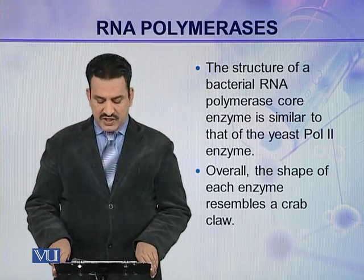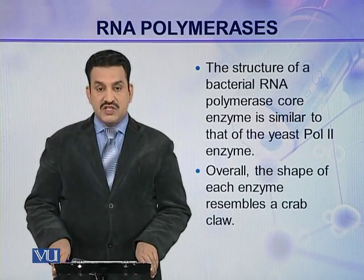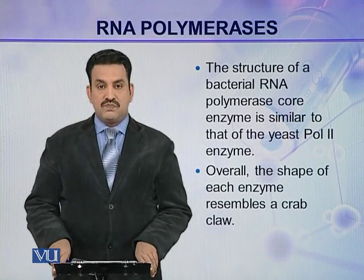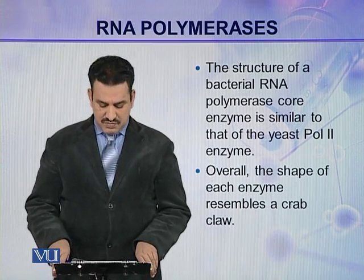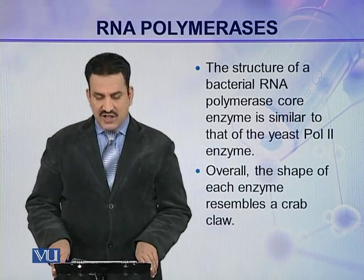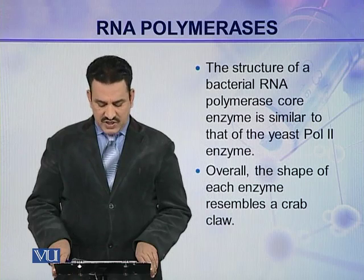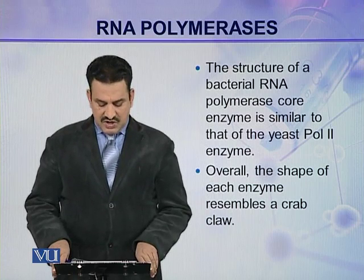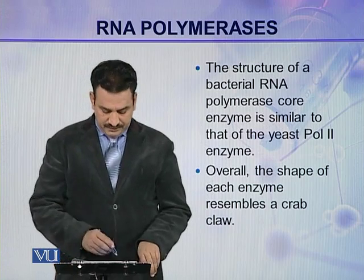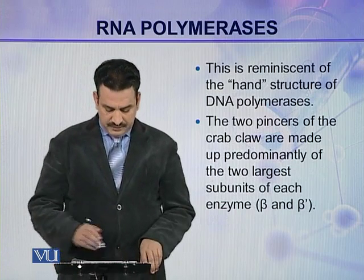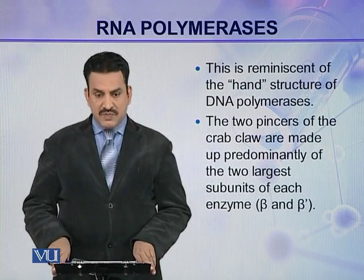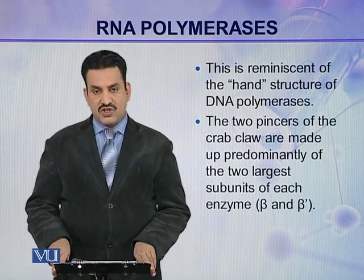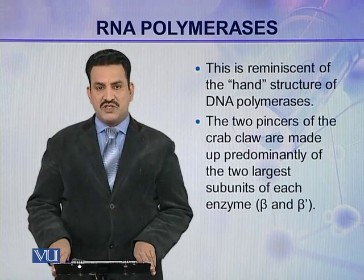The structure of a bacterial RNA polymerase core enzyme is similar to that of the yeast polymerase 2 enzyme. Overall, the shape of each enzyme resembles a crab claw. This is reminiscent of the hand structure of DNA polymerases.